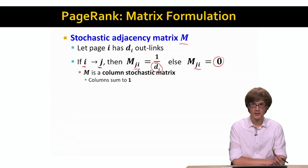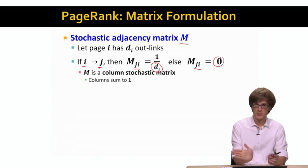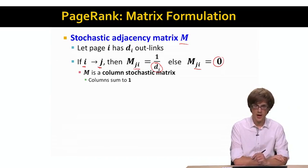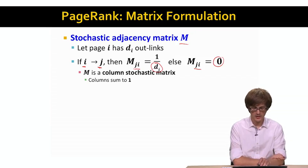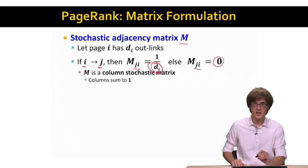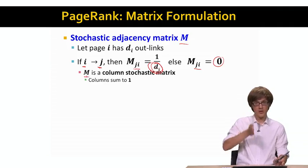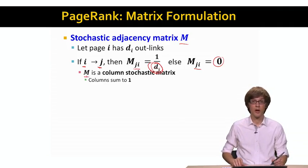You will already see where we are going, right? Before we said that whatever is the importance of a node, this importance gets evenly split along all of its outlinks. So this means that all the outlinks of node i will have the weight 1 over d_i. This means that our matrix is called column stochastic, which means that every column in our matrix sums to 1.